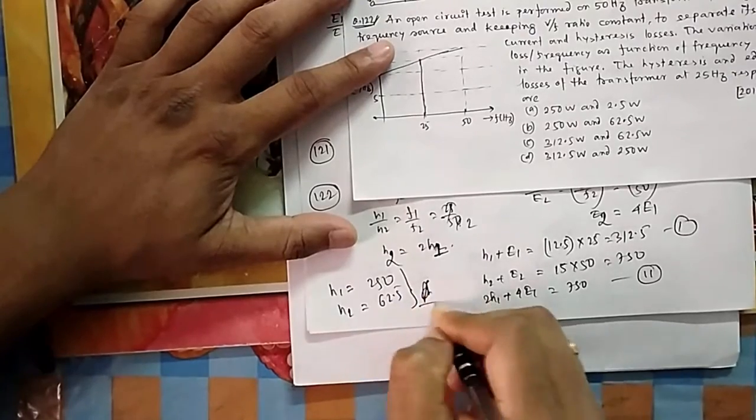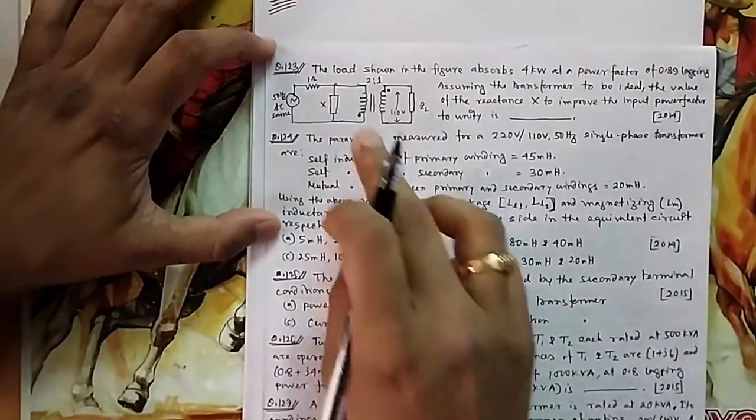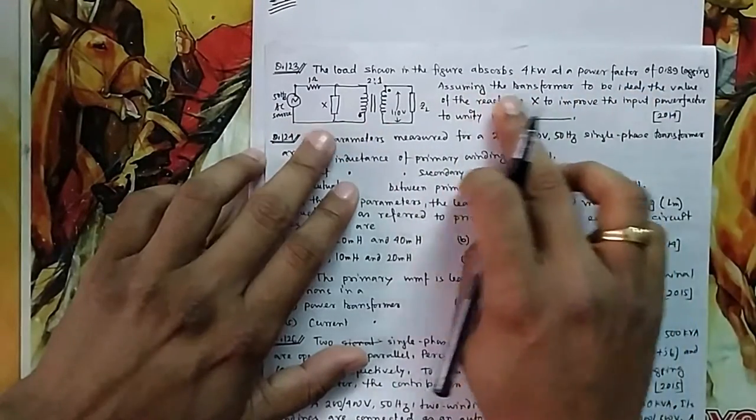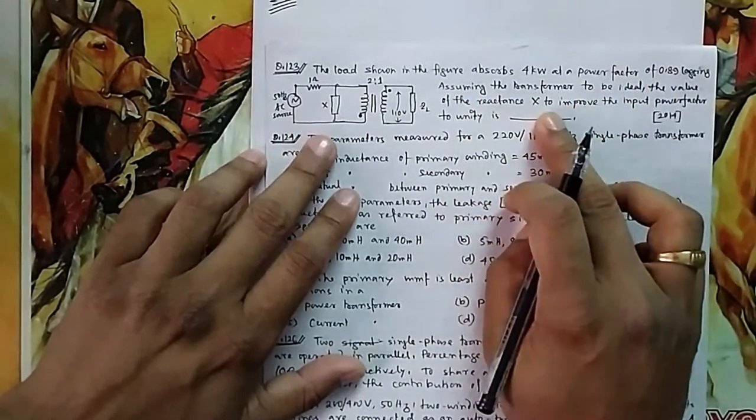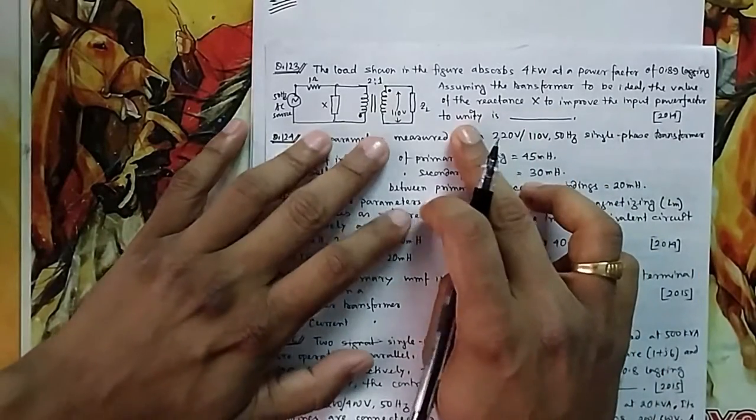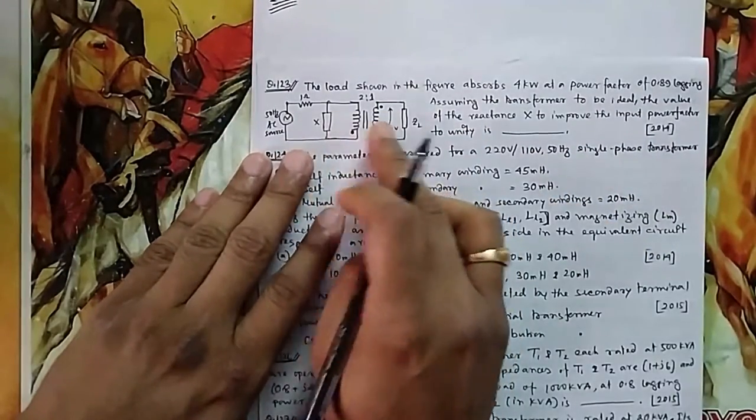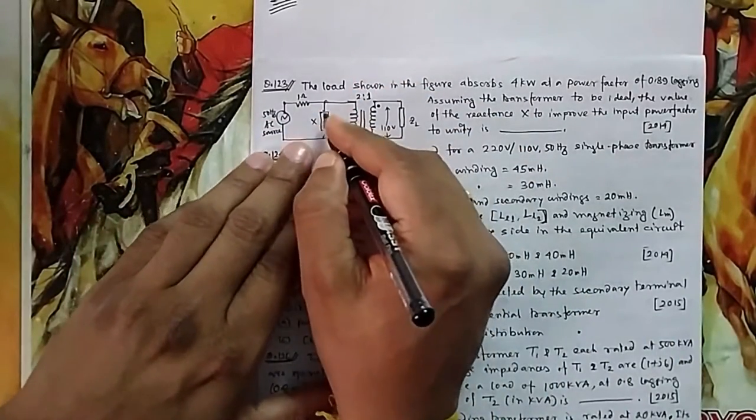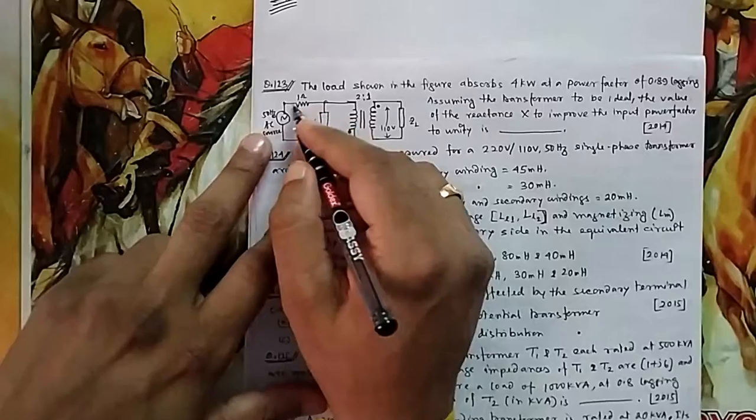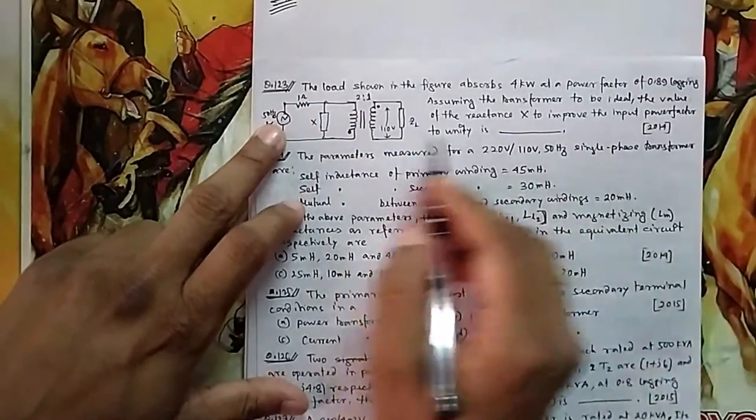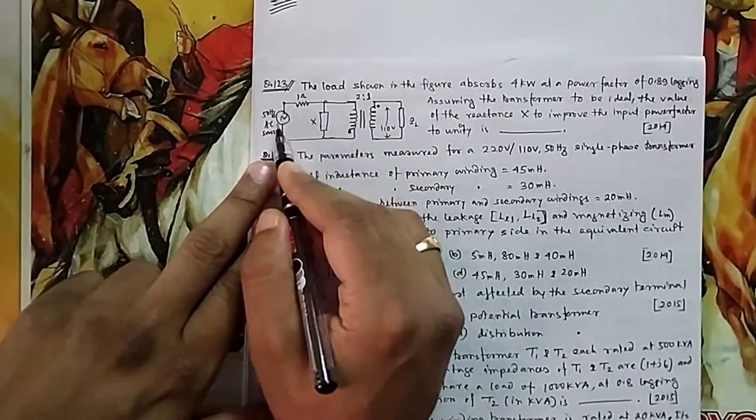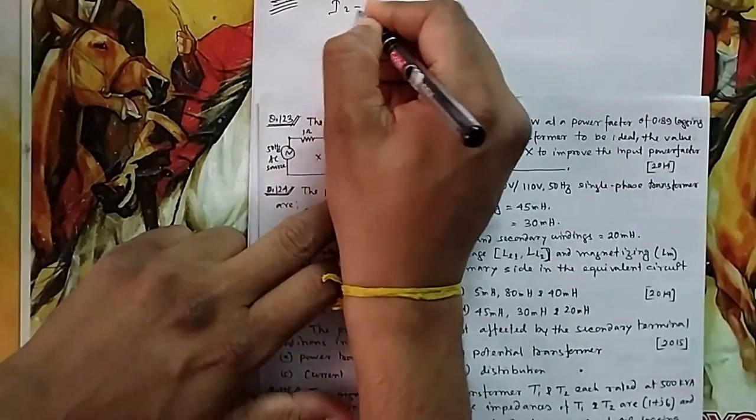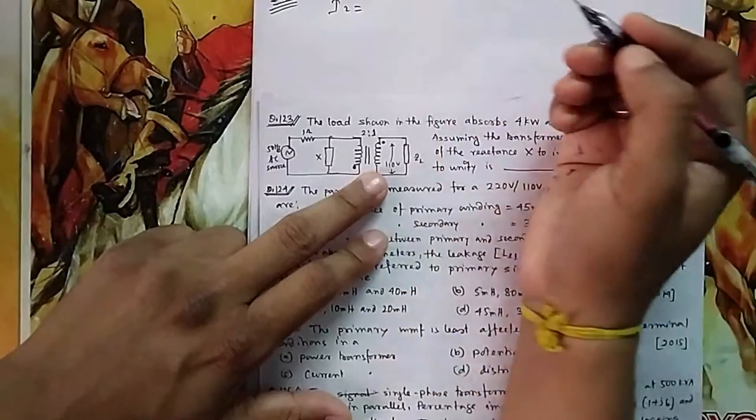Question number 123: The load shown in the figure absorbs 4 kilowatt at a power factor of 0.89 lagging. Assume the transformer to be ideal. The value of the reactance X to improve the power factor to unity. So let me calculate what is the I here, what is the reflected I - it is coming from here. Then that I plus this I should give me the unity power factor I, because this current is taking from the input. Input power factor - that means this current and this voltage should be at the same phase.